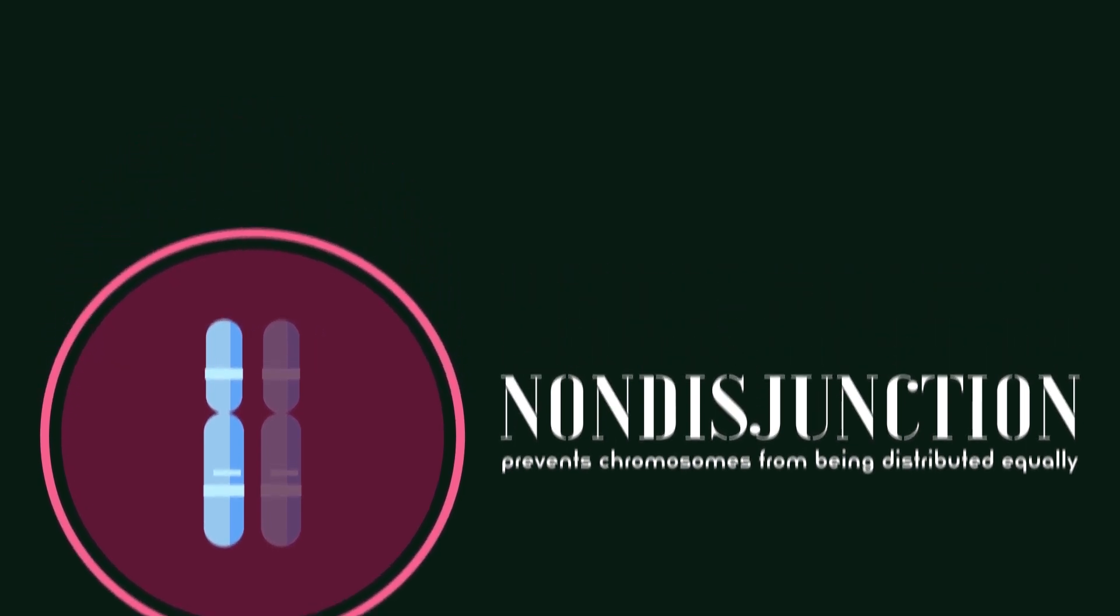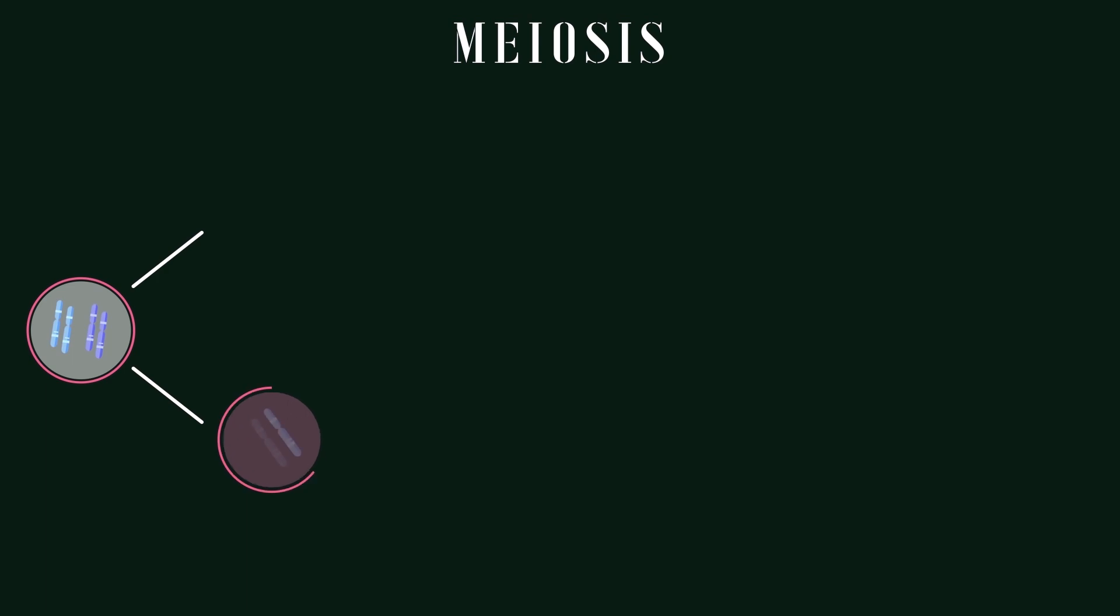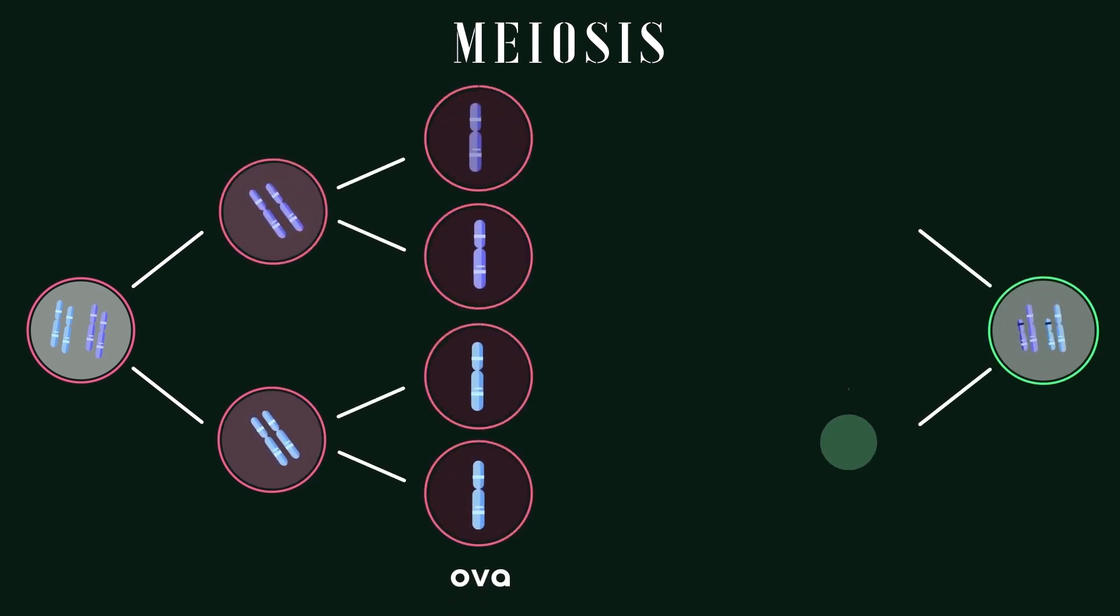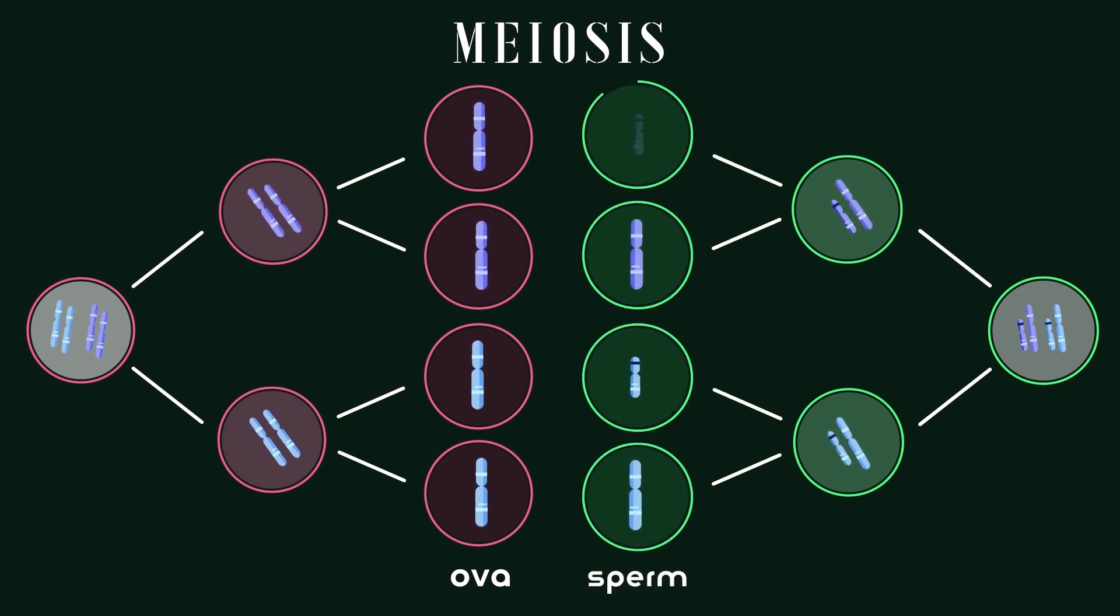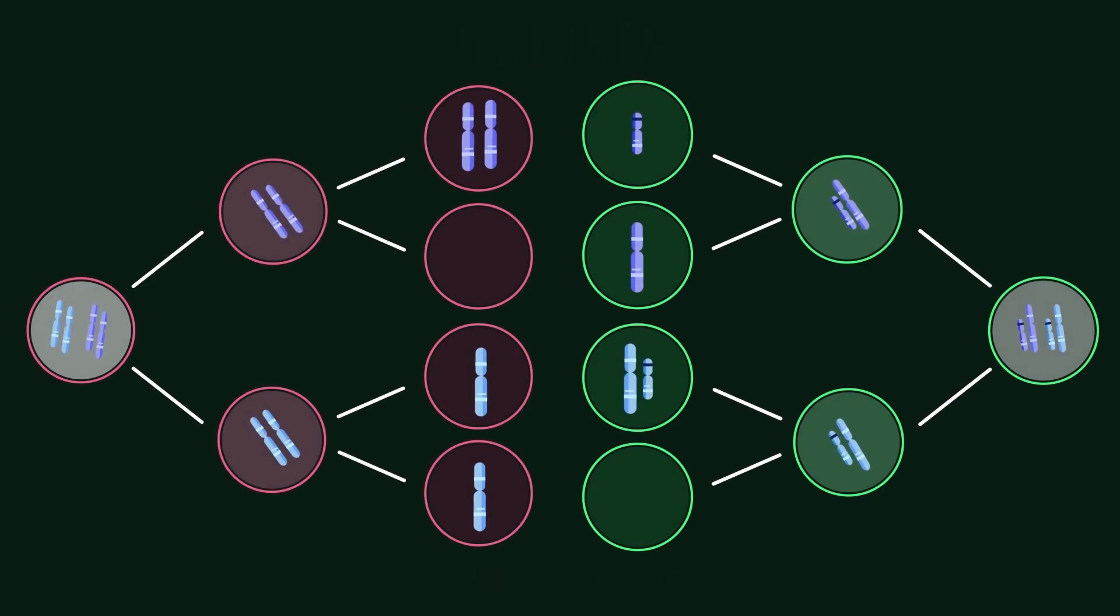During typical reproductive cell division, each egg gets a single X chromosome, leaving four egg cells each with an X, and each sperm gets either an X chromosome or a Y chromosome. However, with non-disjunction, an egg or sperm may end up with an extra X chromosome.